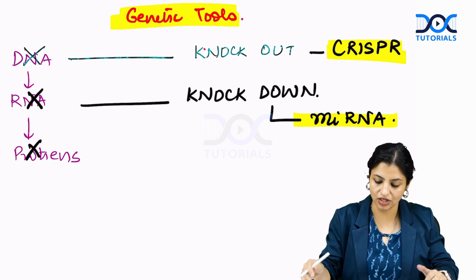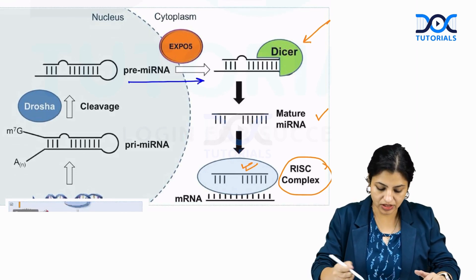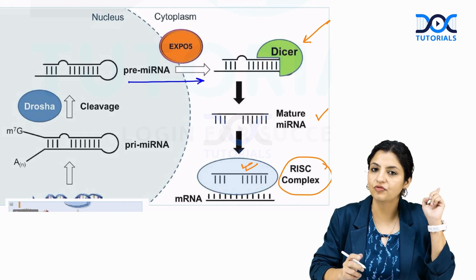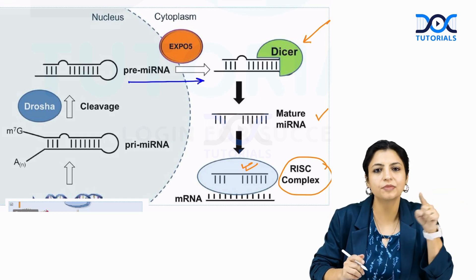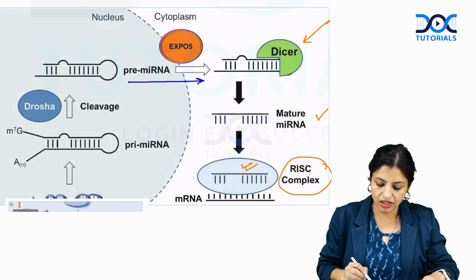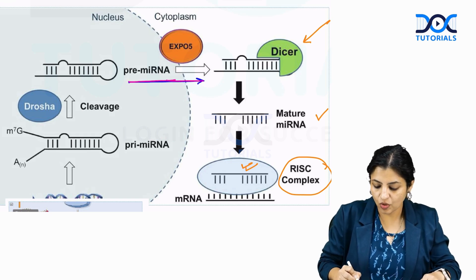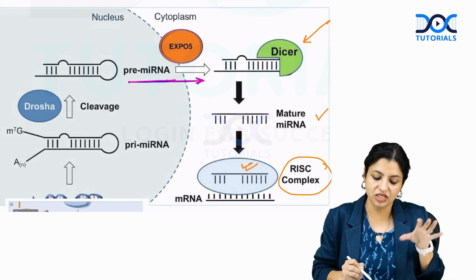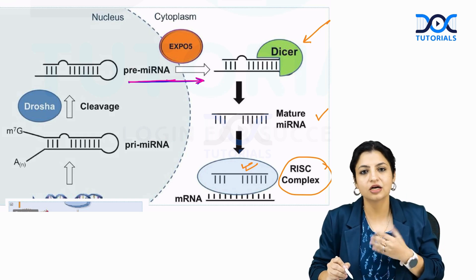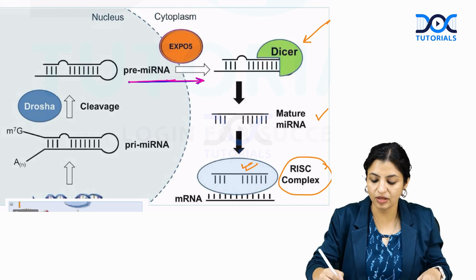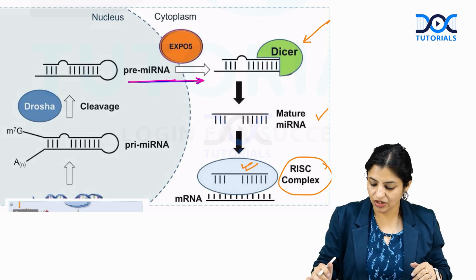Let's understand knockdown technology first. Knockdown technology works with double-stranded RNA, which is a hairpin-shaped RNA. This is your pre-microRNA, formed in the nucleus. When exported out of the nucleus via a molecule called Xpo5, this double-stranded RNA enters the cytoplasm and is immediately acted upon by a molecule called DICER, which breaks it into single-stranded microRNA.